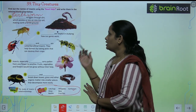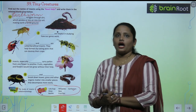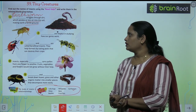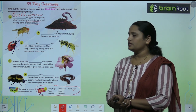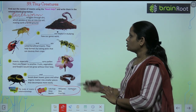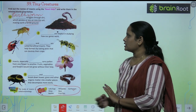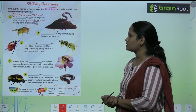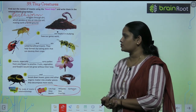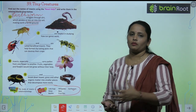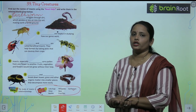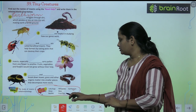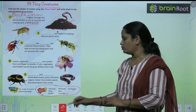The second animal: dash are helpful in studying how our genes work. Yeh jo ek aise insects hain jo help karte hain — are helpful in studying how our genes work. So yeh help karta hai ki humare jo genes hain wo kaise work karte hain. These are fruit flies.